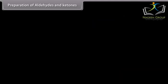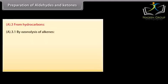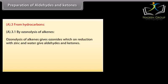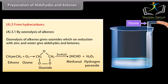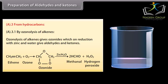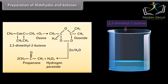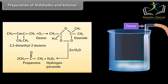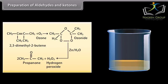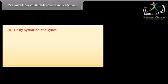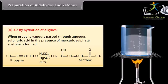From hydrocarbons — by ozonolysis of alkenes: ozonolysis of alkenes gives ozonides which on reduction with zinc and water give aldehydes and ketones. Ozone gas reacts with ethene and forms an intermediate ozonide, in which zinc and water are added to give methanal and hydrogen peroxide. Ozone gas reacts with 2,3-dimethyl-2-butene and forms an ozonide intermediate, which with zinc and water gives propanone and hydrogen peroxide. By hydration of alkynes: when acetylene vapors are passed through aqueous sulfuric acid in the presence of mercuric sulfate, acetaldehyde is formed.